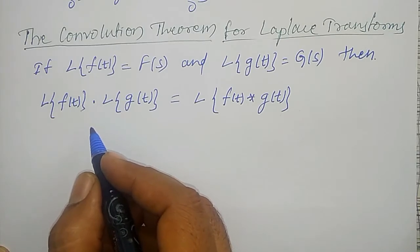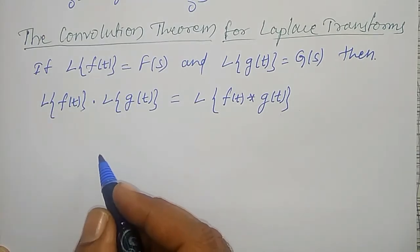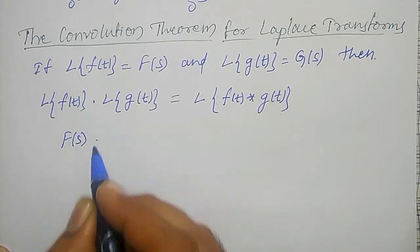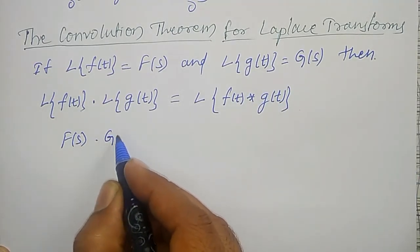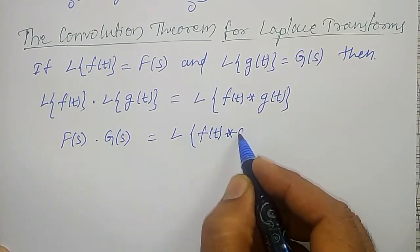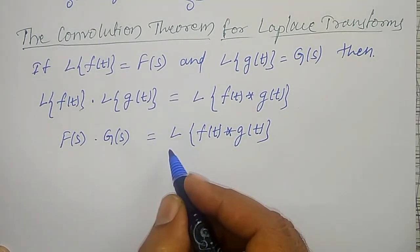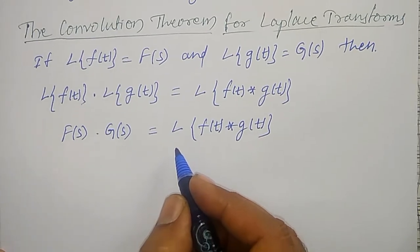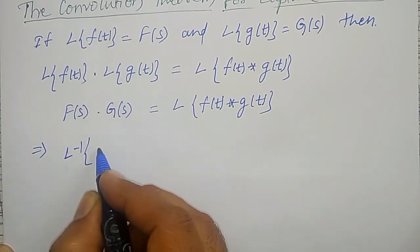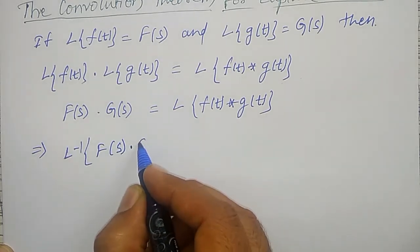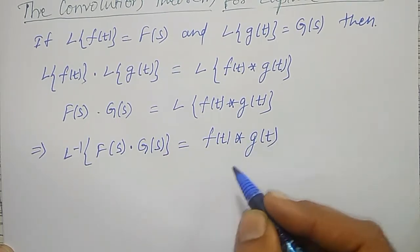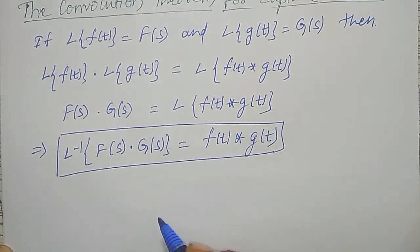For our convenience, I will modify the convolution theorem slightly: the Laplace transform of f of t is capital F of s, and the Laplace transform of g of t is capital G of s, which equals the Laplace transform of f of t convolution g of t. Therefore, applying the inverse Laplace transform, the inverse Laplace transform of F of s into G of s is equal to f of t convolution g of t. Remember this formula for the convolution theorem.